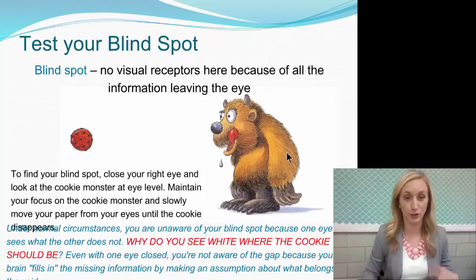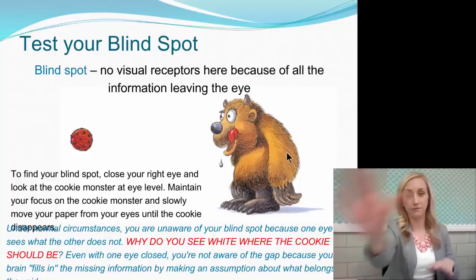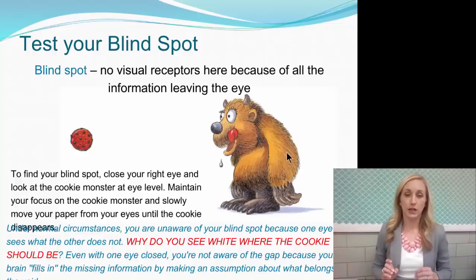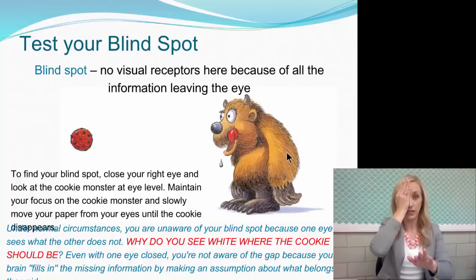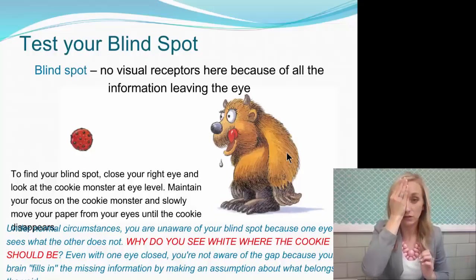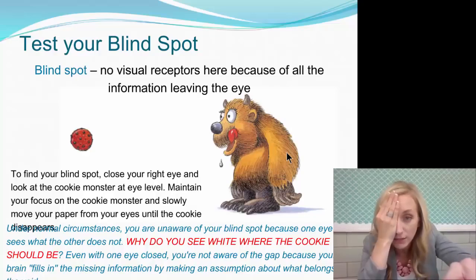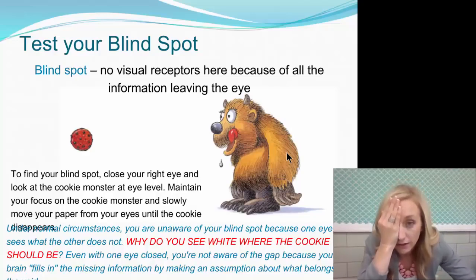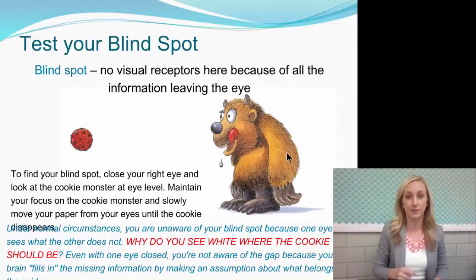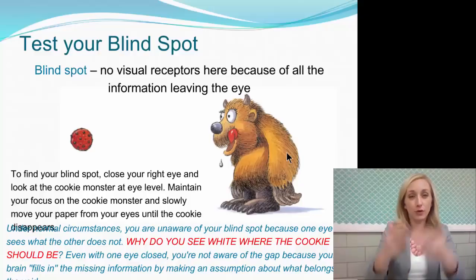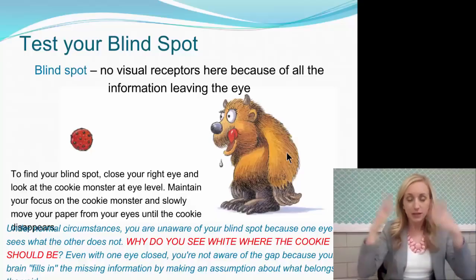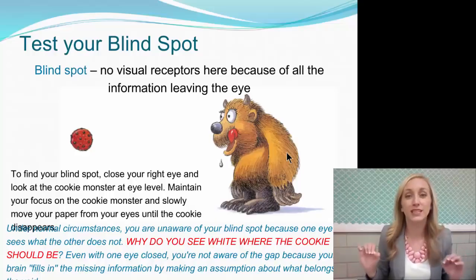We can actually test your blind spot right now. Back up a little from the screen and make sure you're in full screen. Cover up your right eye and, using your left eye, focus on the Cookie Monster on the right of your screen. Get closer and closer until you notice that the cookie disappears. If you move back a little it'll reappear, but at a certain distance the cookie will disappear — that's your blind spot. Your brain will actually fill it in with white, or with whatever color surrounds it, because our brains don't like incomplete information, so they complete it for us.